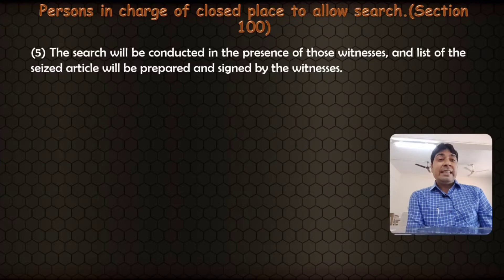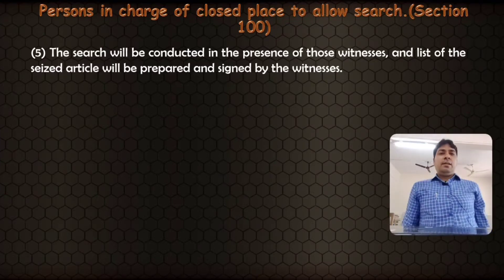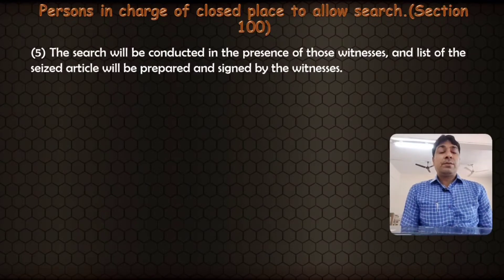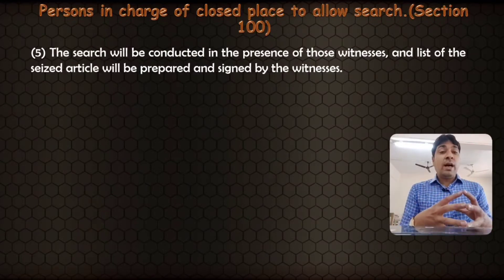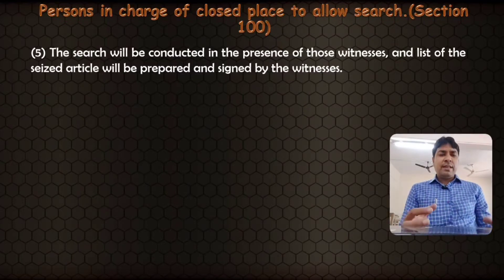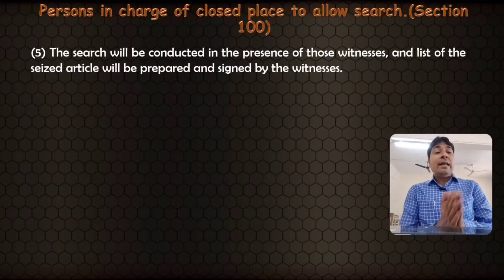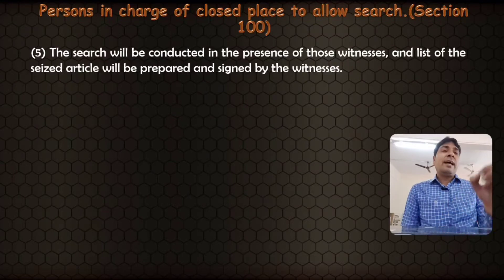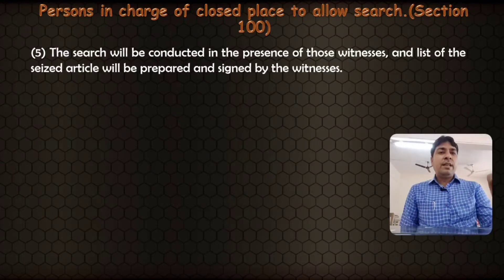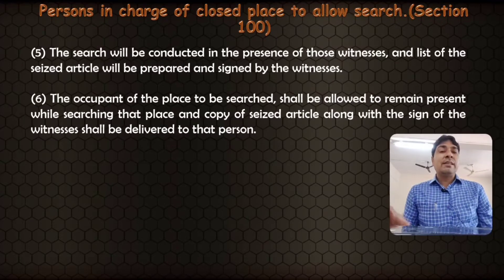Section 100 clause 5: the search will be conducted in the presence of those witnesses, and a list of the seized articles will be prepared and signed by the witnesses. Whatever items are seized from the premises, a list will be made and both witnesses will sign it.